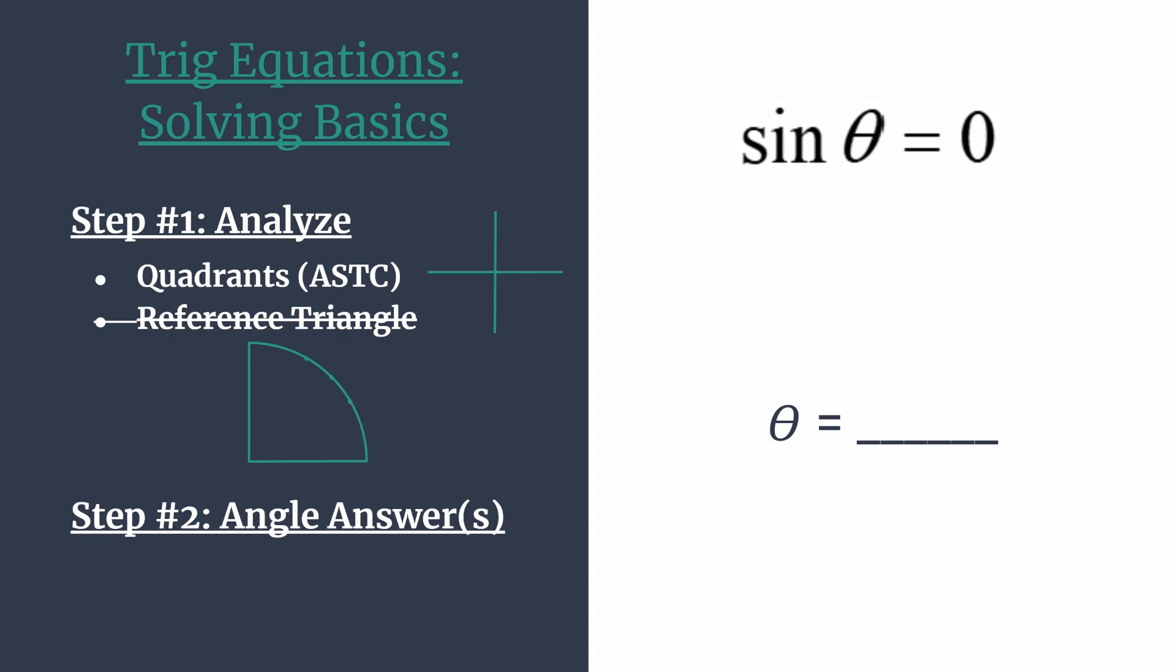For other equations that we've looked at, we've had it equal to some ratio such as one half, square root two over two, or square root three over three. Those are some of our special angle ratios that we're familiar with. But when we're equal to zero or one or negative one, you'll notice that we're dealing with our quadrantal angles. And so in the others, we would start step one, we would go into our quadrants.